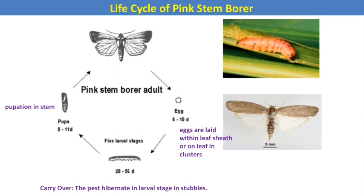After male-female mating, the female moth lays eggs within the leaf sheath or on the leaf in clusters. The larva completes approximately four to five instars during development, then goes into pupation, which occurs inside the stem. The carryover or hibernating stage is the larval stage, present in the stubbles of the crop.